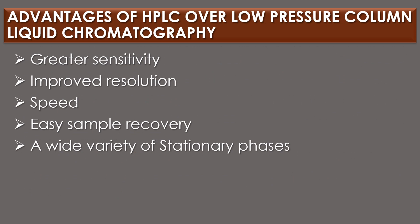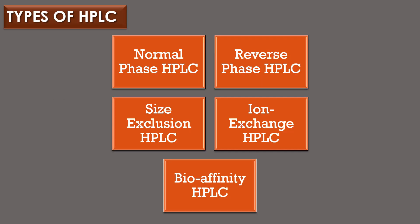Advantages of HPLC over low pressure column liquid chromatography: there are many advantages of HPLC over the traditional low pressure column liquid chromatography. They are greater sensitivity due to the presence of various detectors, improved resolution, speed, easy sample recovery because of the presence of less eluent volume to remove, and a wide variety of stationary phases.